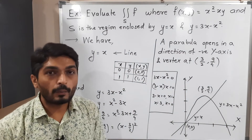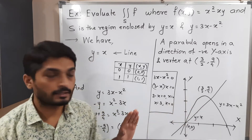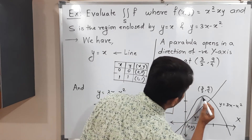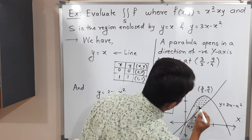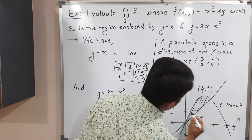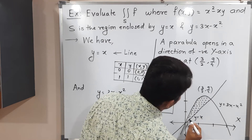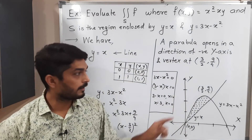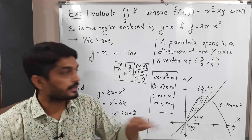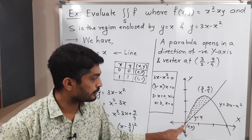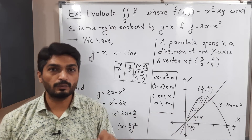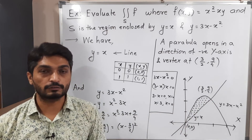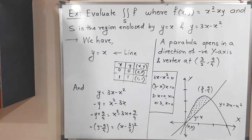The region bounded by this parabola and this line is the region of integration. The parabola and the line also intersect at some point, and at one intersection the point is (0, 0). We need to find all intersection points first, then solve the problem.